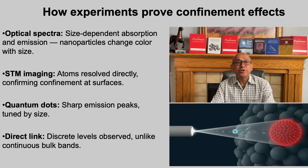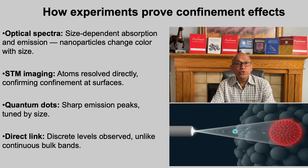How do we know this is real and not just theory? The evidence comes straight from experiment. Optical measurements show that nanoparticles absorb and emit different colors depending on their size — a bulk material might appear uniform, but its nanoscale version can glow blue or red simply because confinement shifts the energy gaps. Scanning tunneling microscopy gives us atomic scale images showing electrons confined in space and even mapping standing wave patterns on surfaces. And with quantum dots, we observe sharp emission peaks that shift with size, exactly what we expect from quantized energy levels. Together, these experiments leave no doubt: quantum confinement is real, measurable, and it fundamentally changes how matter behaves at the nanoscale.